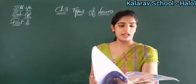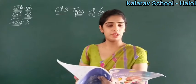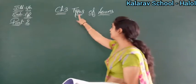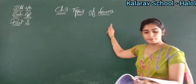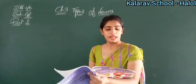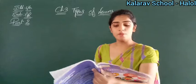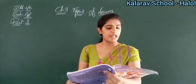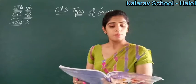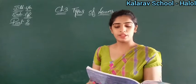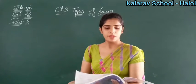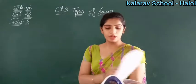So in the previous lecture, we have started a new chapter. That was chapter 3 — types of noun. We have learned about the types of noun. How many types were there? Four types: common nouns, proper nouns, material nouns, and collective nouns. Up till that, we have completed.